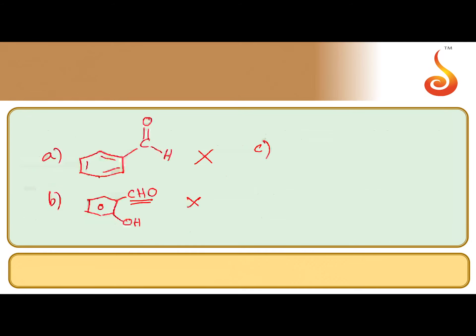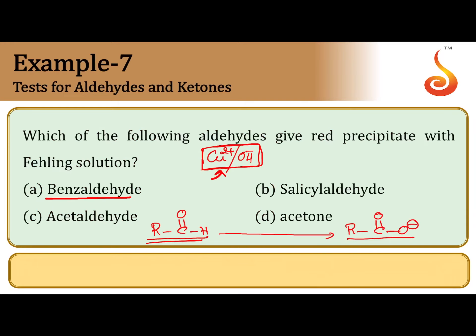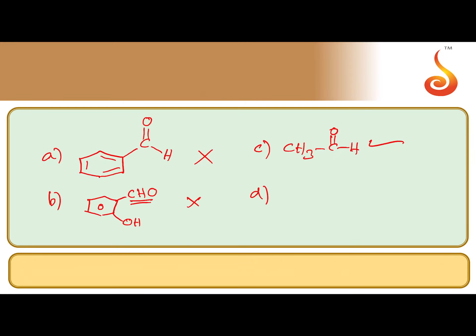Acetaldehyde is an aliphatic aldehyde, so it gives Fehling's test. Next, acetone — this is a ketone, not an aldehyde. Any ketone would not give a positive test with Fehling's reagent. Among aldehydes, only aromatic aldehydes cannot give a positive test with Fehling's reagent. So acetone also cannot give. The answer is C, that is acetaldehyde.